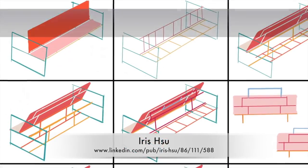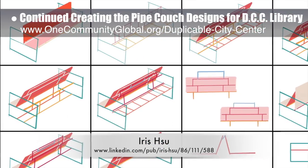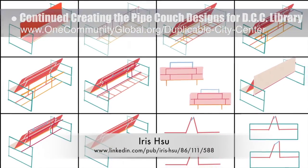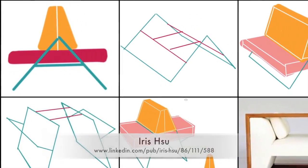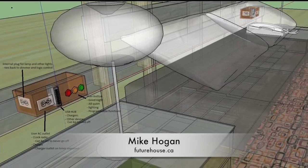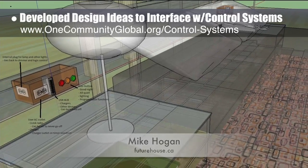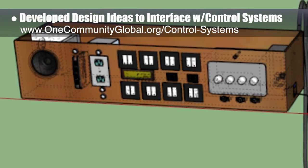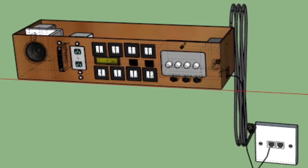Ira Sue, industrial designer, continued with additional pipe couch designs for the duplicable city center library. The drawings you see here are her sixth generation drawings, continuing development of the couch idea with an adjustable back and exploring different ways to support it. Here you see her seventh generation drawings, returning to the stationary back and exploring how to significantly simplify it all. Behind the scenes, Mike Hogan, automation systems developer and business systems consultant, developed the first couple of design ideas for users to manually interface with the control systems through hardware built into the bed design. These designs are for a removable and replaceable box with a microcontroller that would allow for easy bedside control of all key system elements in the room.